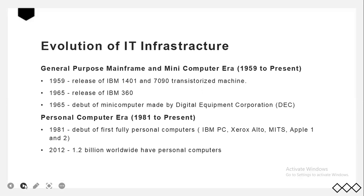During the mainframe era, the majority of infrastructure was provided by a single vendor — the producer of the software and hardware — under the supervision of experienced programmers and system operators. In 1965, the debut of minicomputers made by Digital Equipment Corporation (DEC) began to alter this, enabling decentralized computing tailored to individual departments. DEC minicomputers provided powerful machines at much lower prices than IBM mainframes, and they have since developed into mid-range computers or servers.